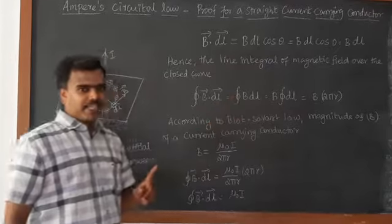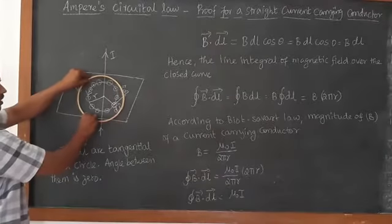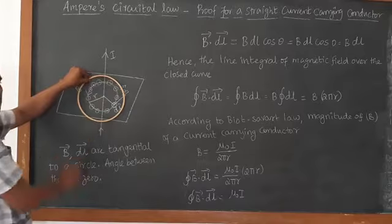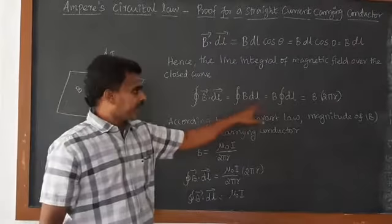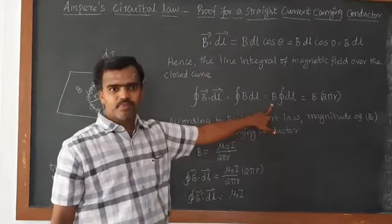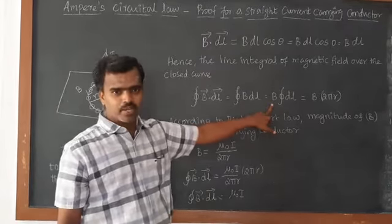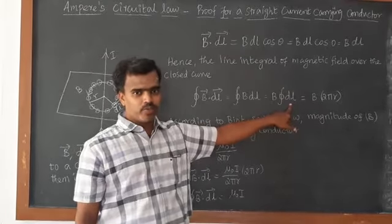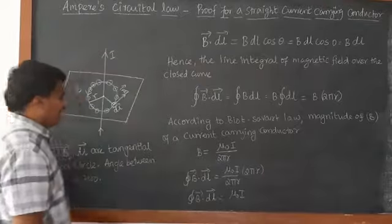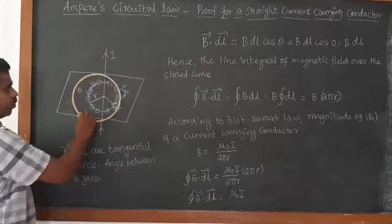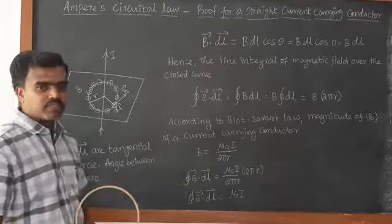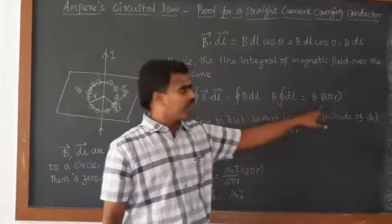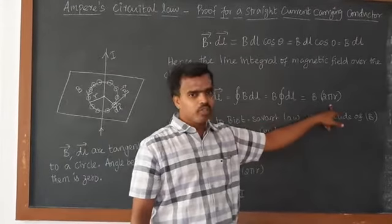The magnetic field around the circle is constant; only the small element dL changes. So we can take B outside the integral. We only need to evaluate the line integral of dL. The line integral of dL gives the circumference of the circle, which is 2πR. So integrating dL around the closed path gives 2πR.